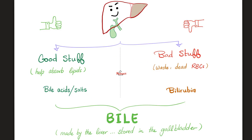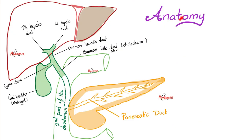Whether we're talking about good stuff or bad stuff, you can lump them together in a liquid known as bile, which is the product of the liver. Bile is made by the liver and stored in the gallbladder. Quick anatomy review: here is the liver, with a right lobe and left lobe. Therefore, we have a right hepatic duct and a left hepatic duct, which converge into the common hepatic duct.